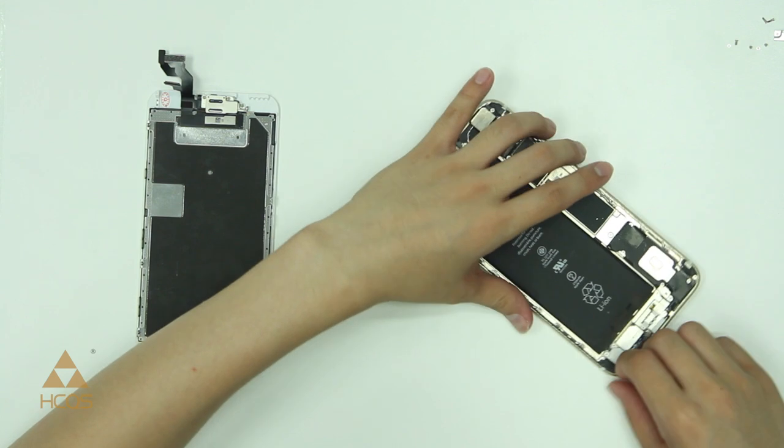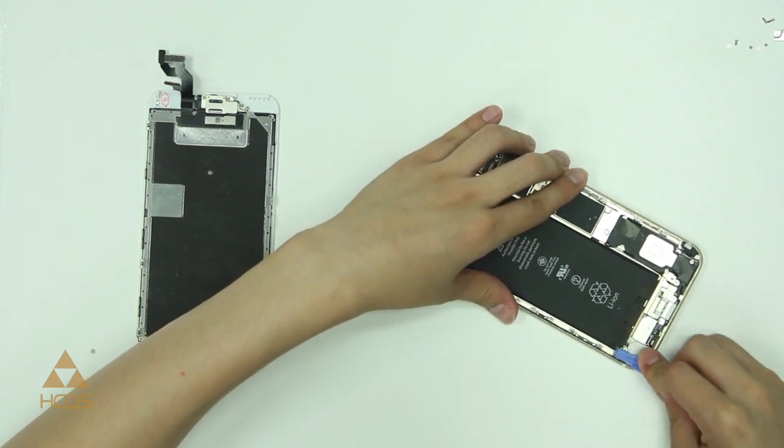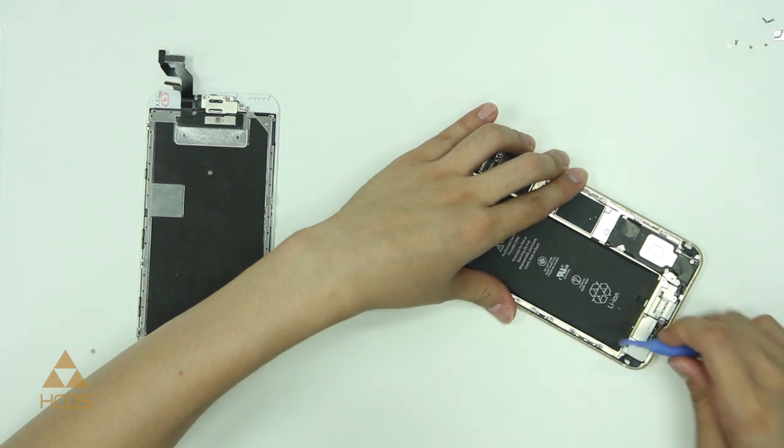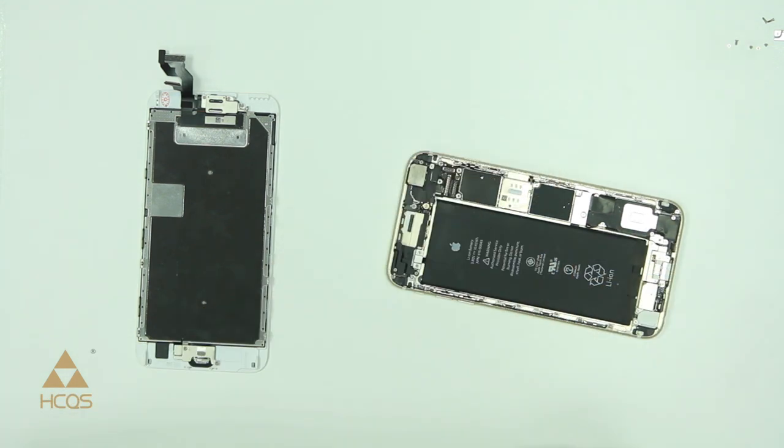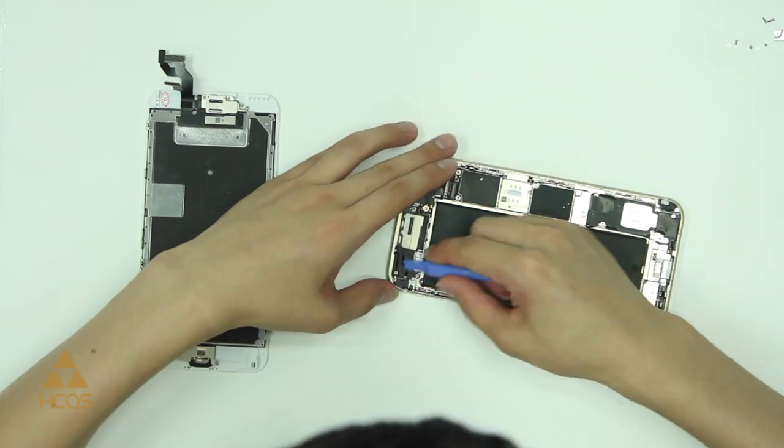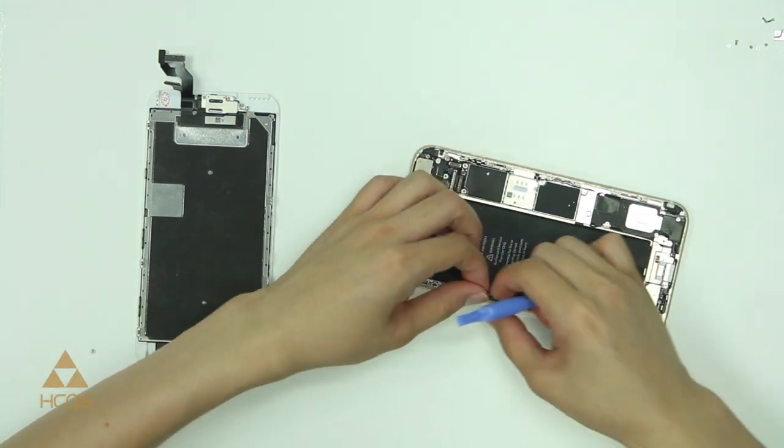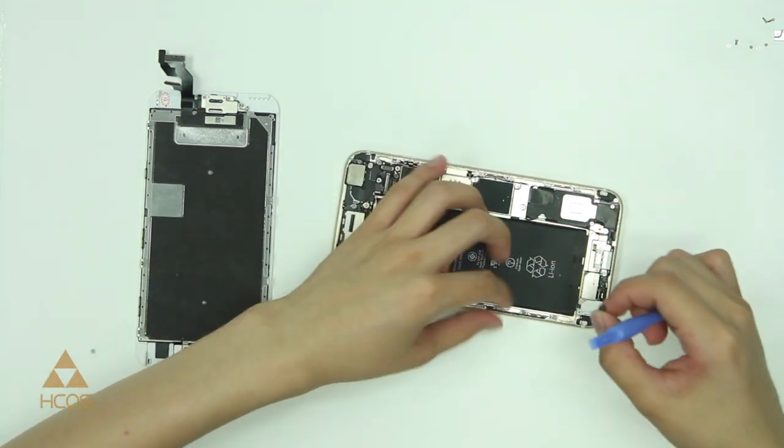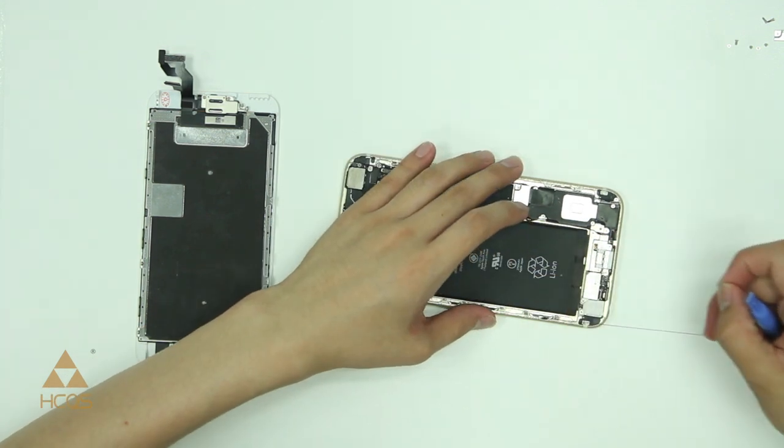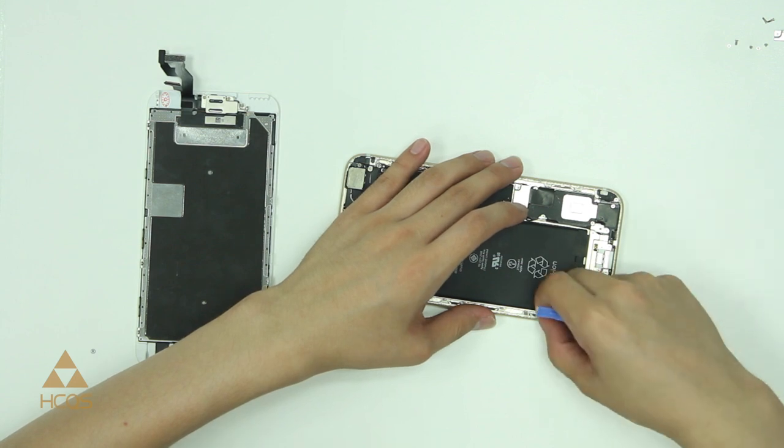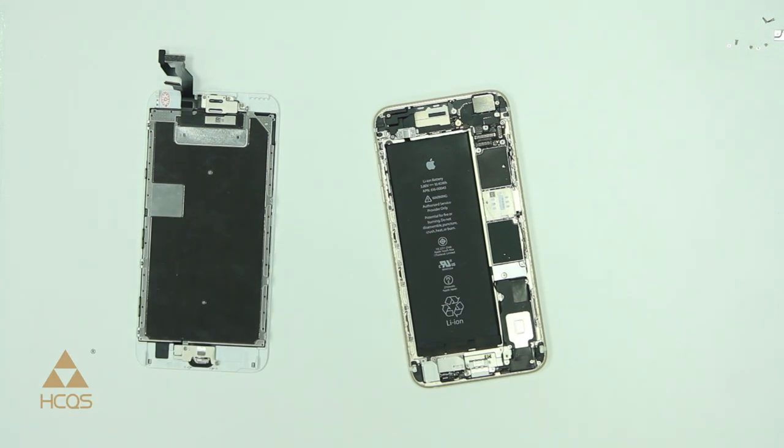So what we're going to do is make sure that we have no residual adhesive left over from the old gasket. If you use a soft pry tool, that's usually the best way. You want to make sure that you don't poke any holes in anything, especially the battery or cause any damage to the logic board or the flexible cables that are attached to it. Once we're sure that we have a clean surface, we can take the new adhesive which will come with two pieces of wax paper, one on each side of it.